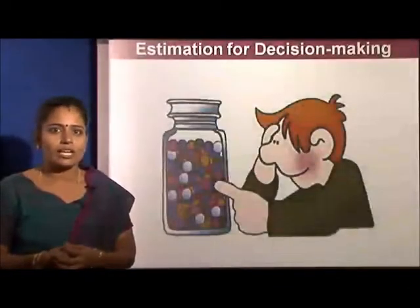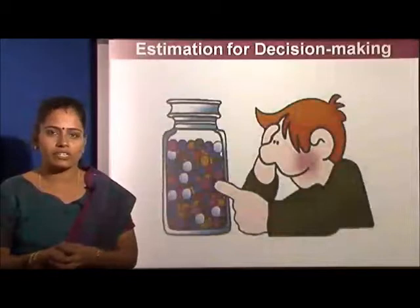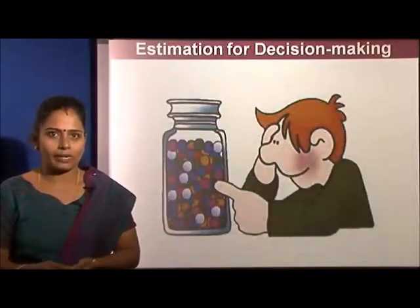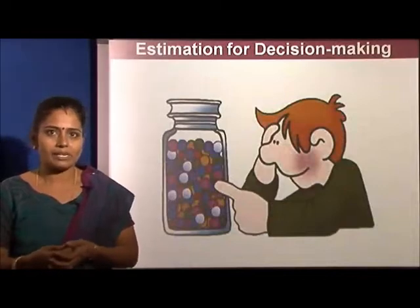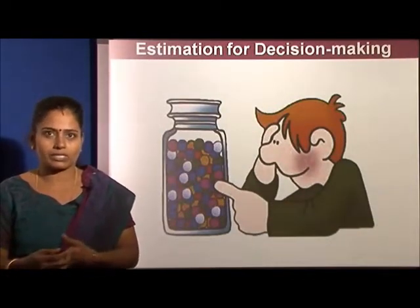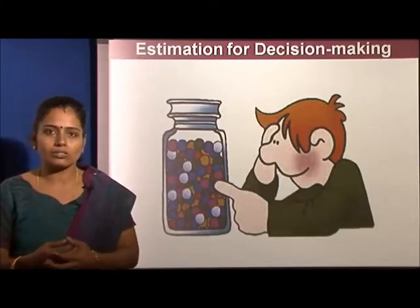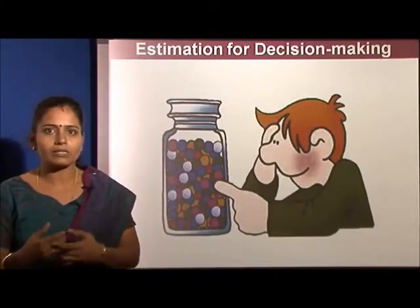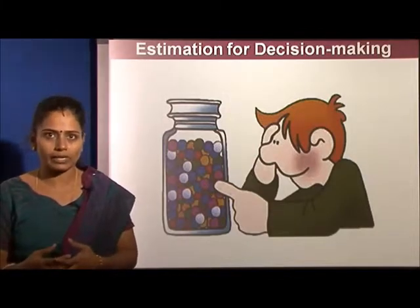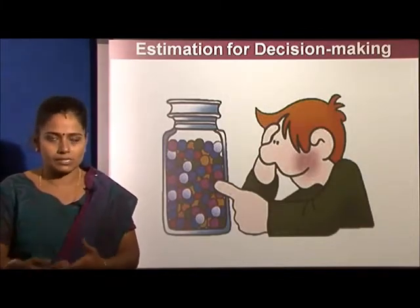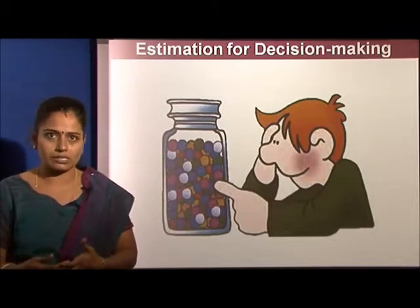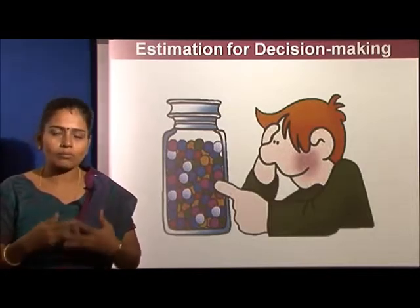In this chapter, we are going to deal with estimation for decision making in business. We will have to estimate a lot of parameters — for example, projections for next year based on the past. Such things help us understand where we stand in business and what decisions to make, so that we can improve our business strategy and come out successful.